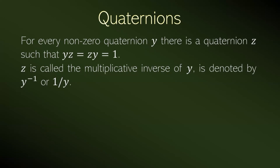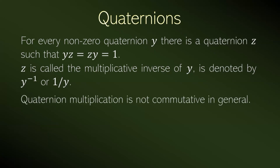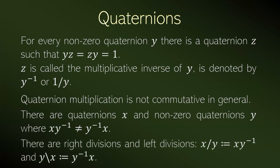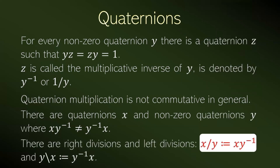As I said, the quaternion multiplication is not commutative in general. And because of this, there are quaternions x and non-zero quaternions y where the right multiplication by the multiplicative inverse is different from the left multiplication by the multiplicative inverse. Because of this, in quaternions we have two divisions: the right division and the left division, as denoted as we can see.